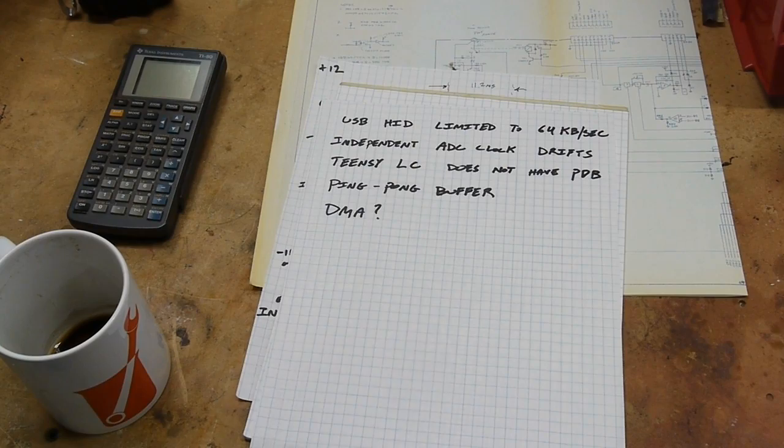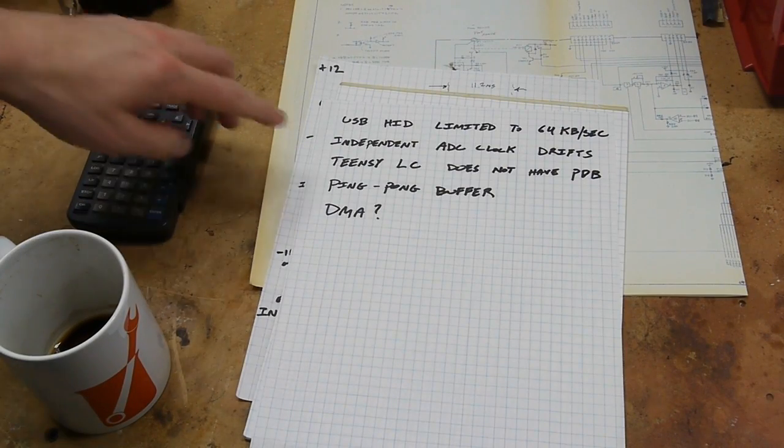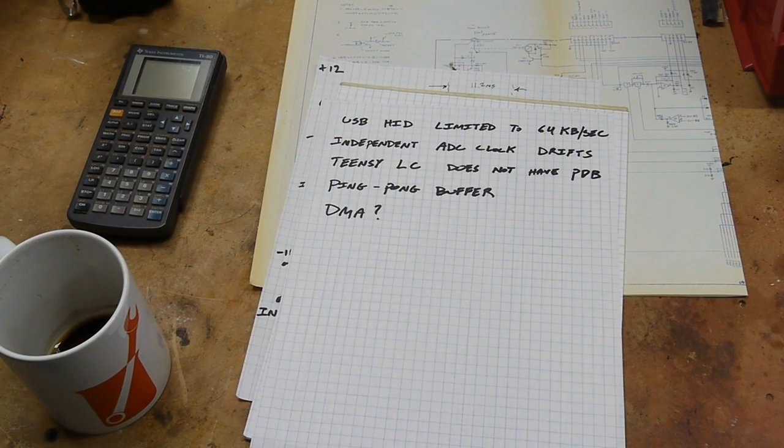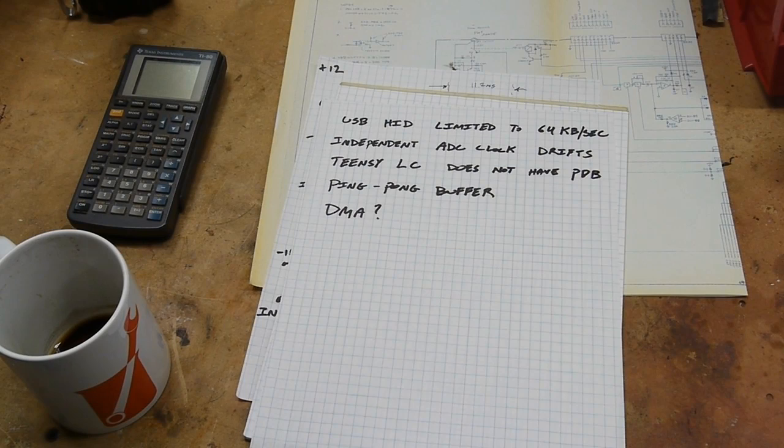The Teensy 3.1 has this, but the Teensy LC doesn't. When I started this project, I thought I had a 3.1 on the shelf, but I didn't—I had an LC. Then I started coding it and thought, oh well, now it's a challenge. I get to make it work without the PDB.